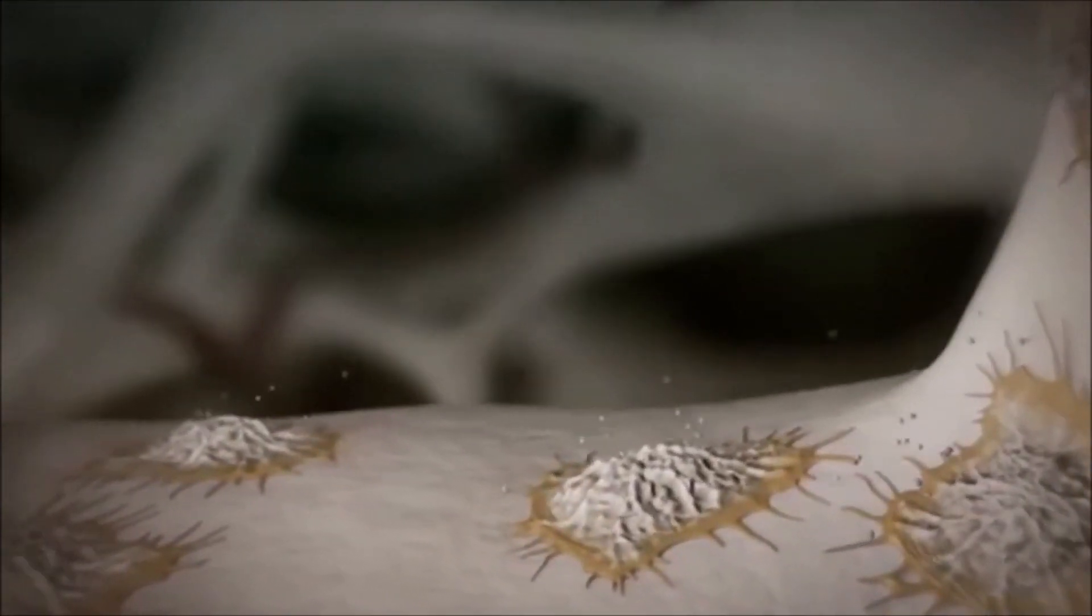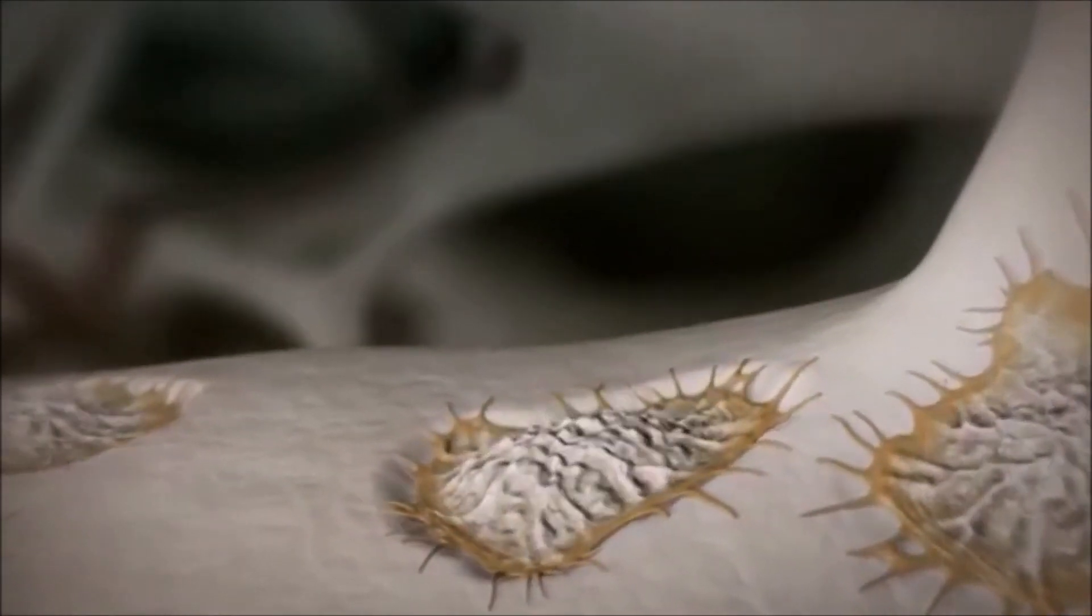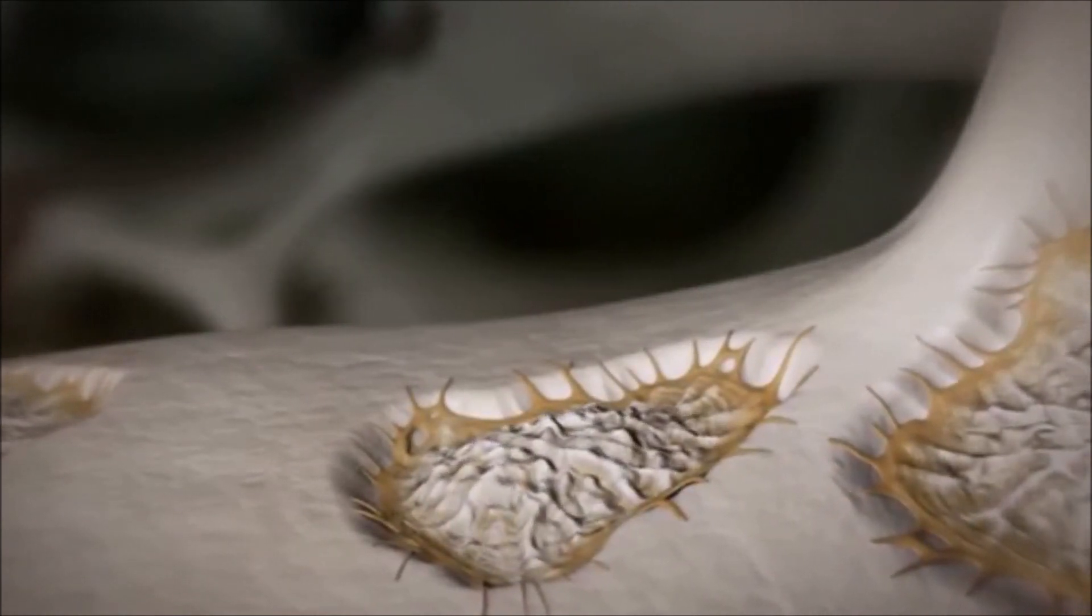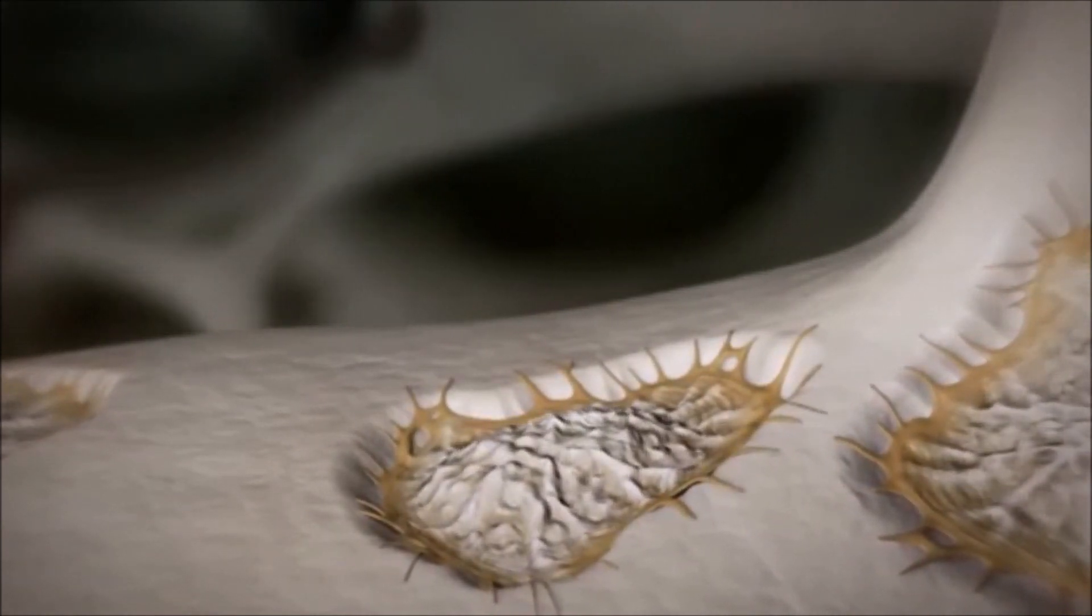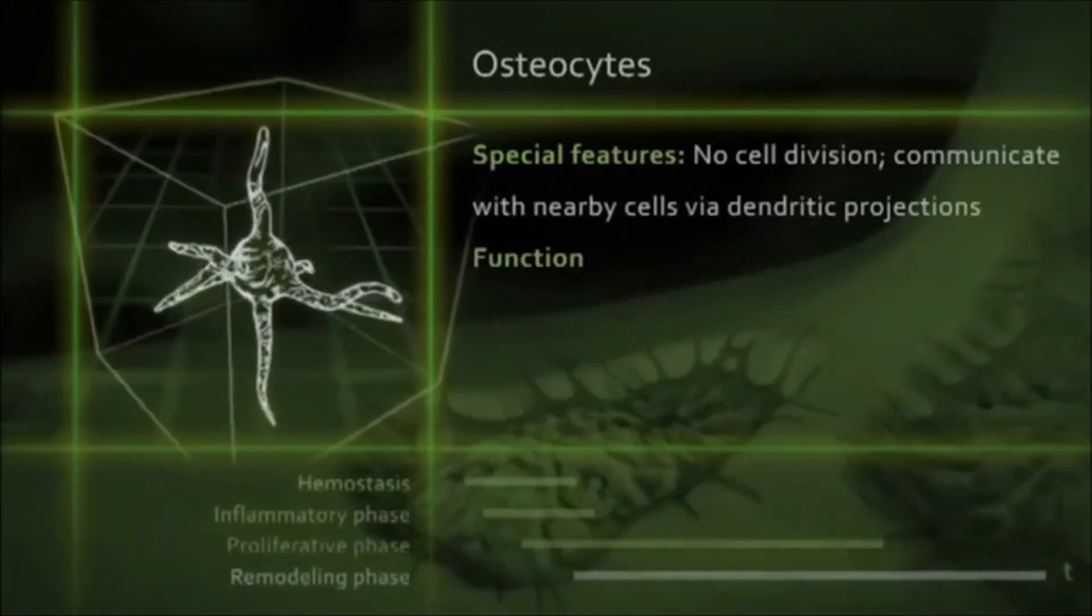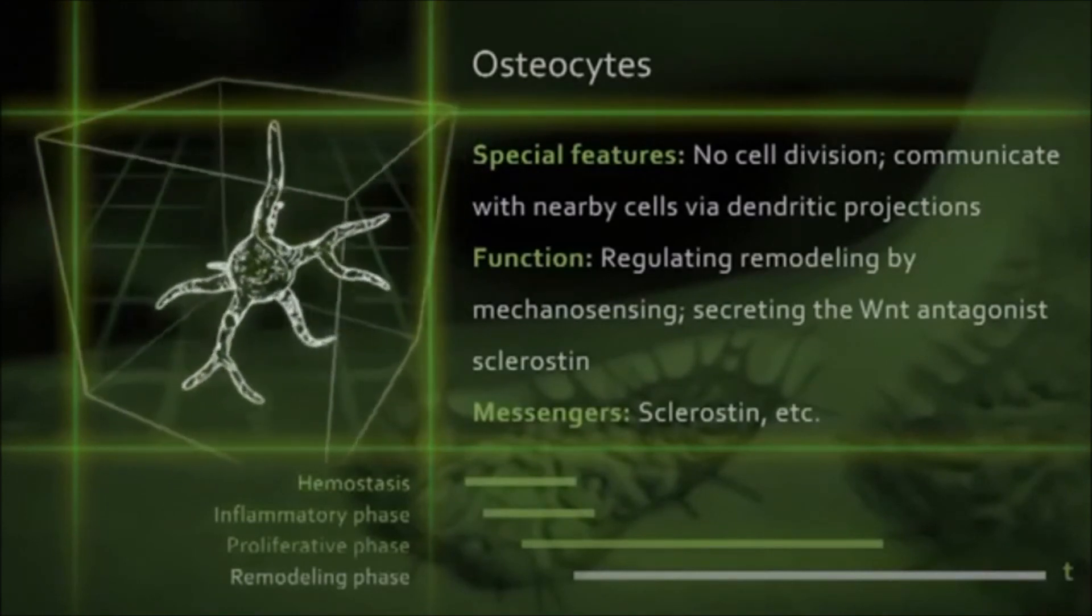This is made possible by the synergy of osteoblasts and osteoclasts. The osteoclasts, activated by the osteoblast messenger Rankel, resorb the woven bone. The osteoblasts then lay down highly organized lamellar bone. The work of both cells is mainly coordinated by the osteocyte and its own messengers such as sclerostin.